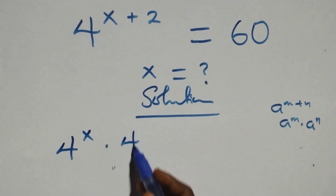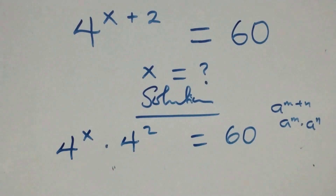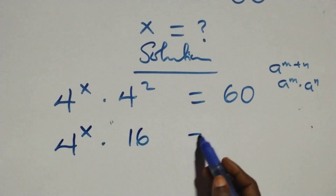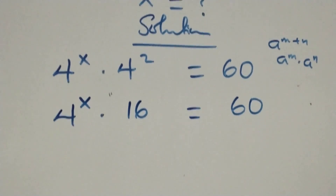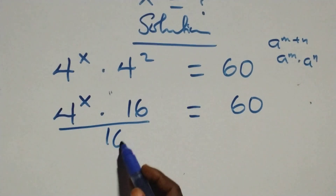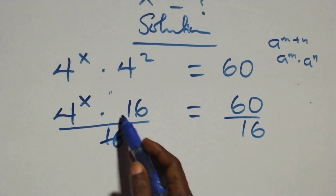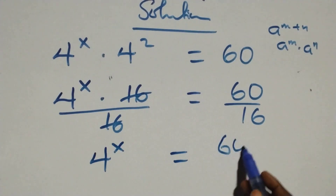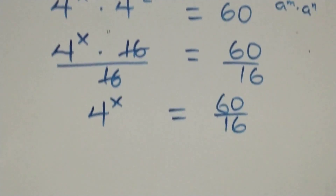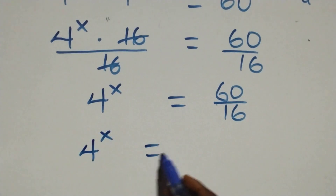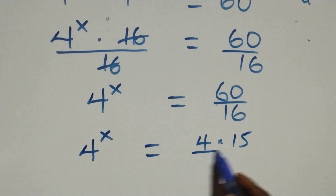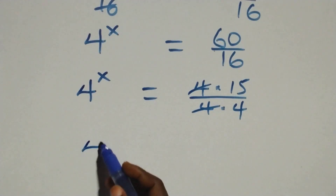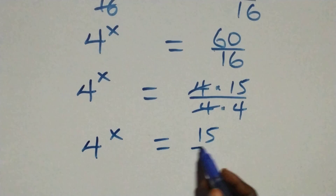We can express this as 4 raised to power x times 4 squared — 4 times 4 is 16 — equals 60. Here we divide both sides by 16. The 16s cancel each other, and we have 4 raised to power x equals 60 over 16. We can express this as 4 raised to power x equals 4 times 15 over 4 times 4. The 4s cancel, giving 4 raised to power x equals 15 over 4.